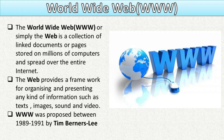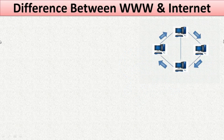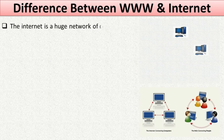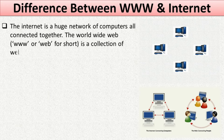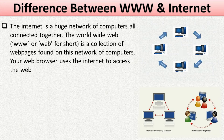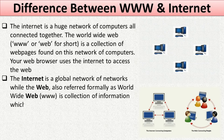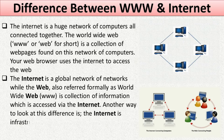The information on the internet is stored in the form of electronic documents or web pages, and these millions of electronic documents are linked with each other and stored on computers on the internet known as servers. These electronic documents contain information in the form of text, images, sounds, and videos. The internet is a huge network of computers all connected together, while the World Wide Web is a collection of web pages found on this network. Your web browser uses the internet to access the web.